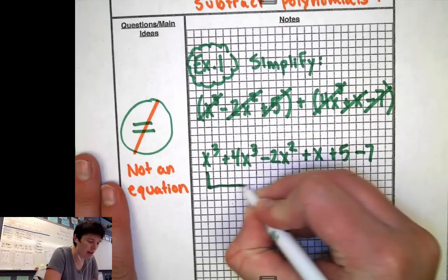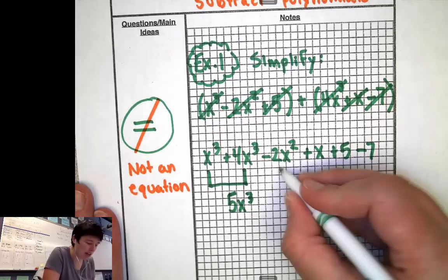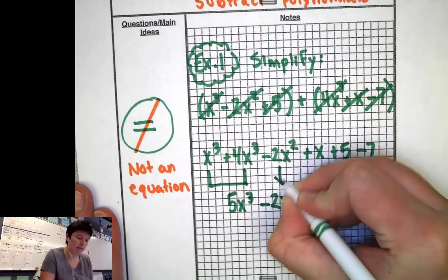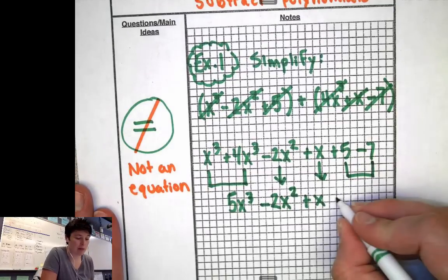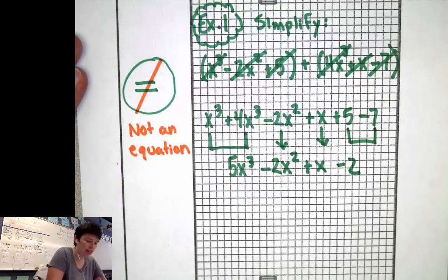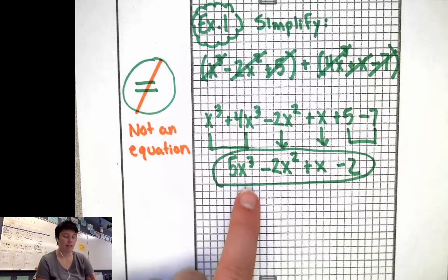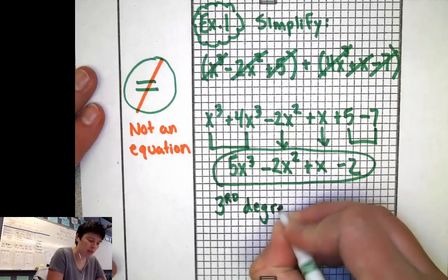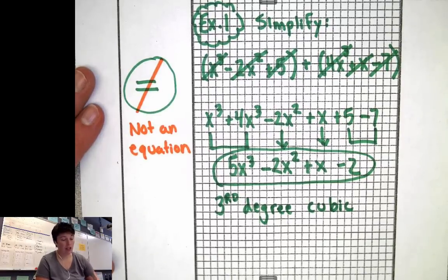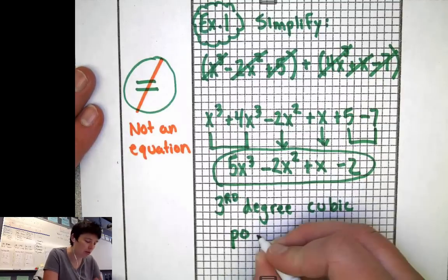Now we just combine these like terms. x cubed plus 4x cubed gives us 5x cubed. I would put the minus 2x squared with something, but I can't — it's not the same — so it just comes down. The plus x has nothing to go with it, so that just comes down. And 5 minus 7 is a negative 2. We have now simplified our expression. The highest power is 3, so it's cubic — a third degree polynomial. It's got 4 terms, so it's a polynomial. I can't call it a trinomial or binomial, so this is just a polynomial.